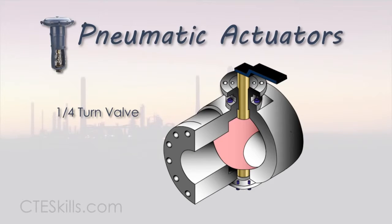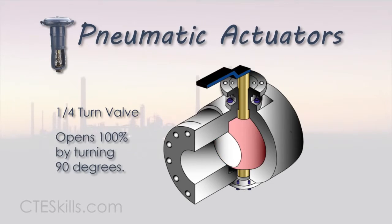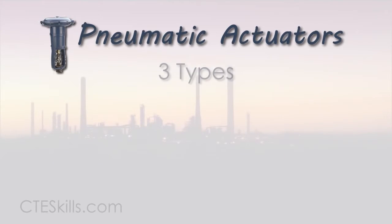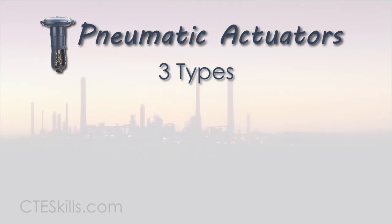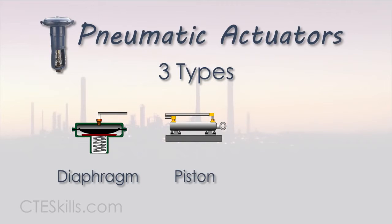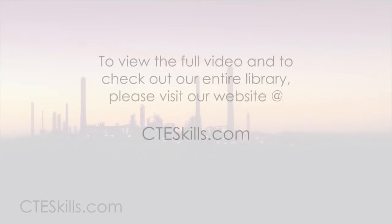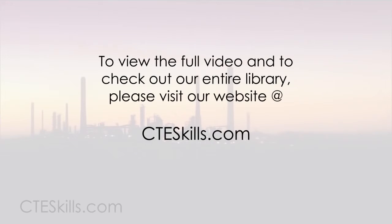A quarter-turn valve is one which can be opened 100% by turning the flow control element just 90 degrees. There are three types of pneumatic actuators: diaphragm, piston, and vane.